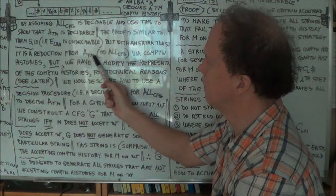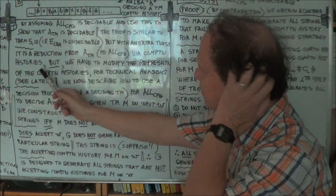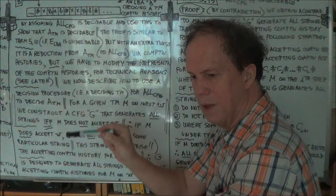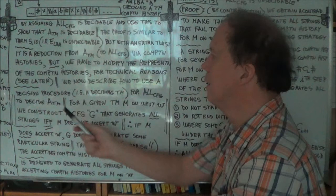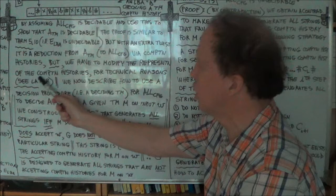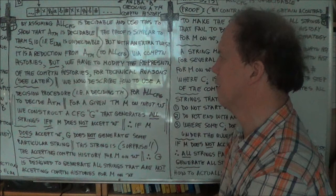Not surprisingly, we use computation histories — but here's the twist: we have to modify the representation of the computation history. Before, we just had hash signs and the sequence of symbols between the hash signs. This time, for technical reasons explained later, we reverse — we have to change the format of the computation history.